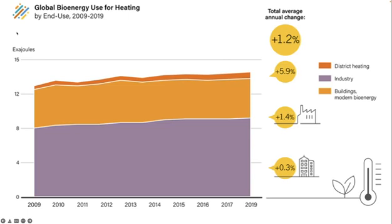The use of biomass and waste fuels for energy production in China is also growing. Biomass can produce heat for space heating in buildings through the burning of wood logs, chips, or pellets produced from wood. The informal use of wood and other biomass to heat individual residences is prevalent in developing economies as well as in developed and emerging ones.